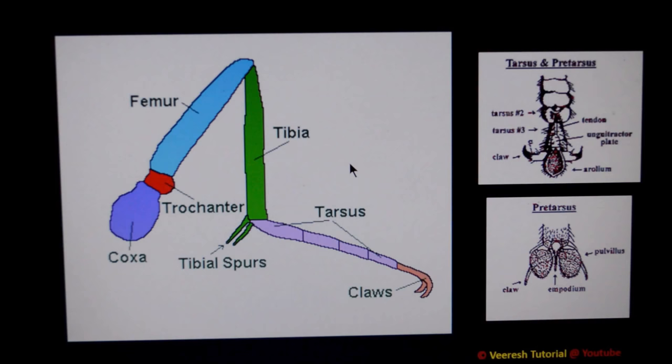In this video, I will explain about insect legs. Each insect leg consists of 5 segments: coxa, trochanter, femur, tibia, and tarsus.